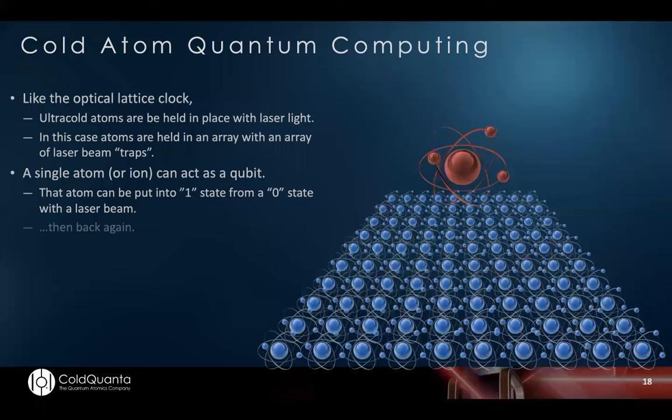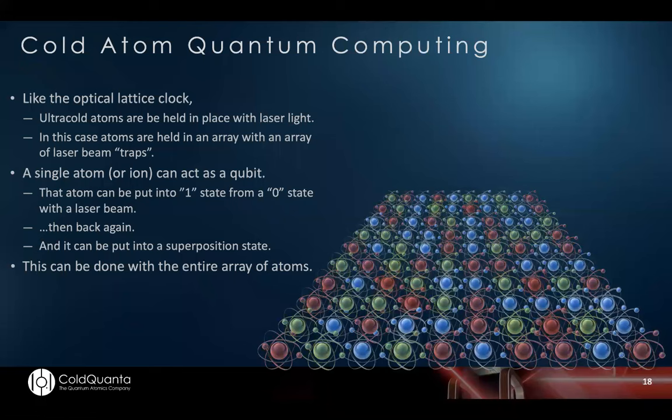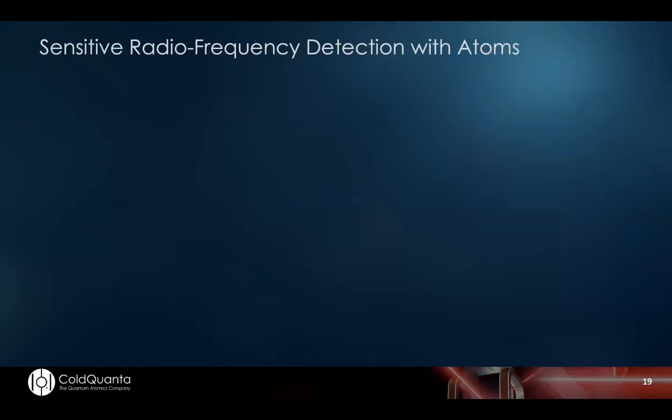And we can do the same in a quantum computer where we hold atoms in place, not the same way, but in a periodic pattern where each atom is held by its own laser beam. We can shine on laser light to change the atom from one state we call zero to another state one and back again. We can put it in a superposition state. And that is the key to power of quantum computing. One of the keys is that I can make a zero and a one, not just a zero or a one. And in fact, I can do that with an entire array of atoms, put them in various states. And then I can have them talk to each other to carry out quantum logic.